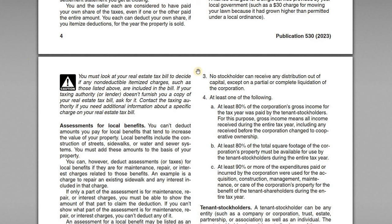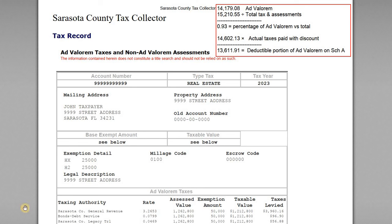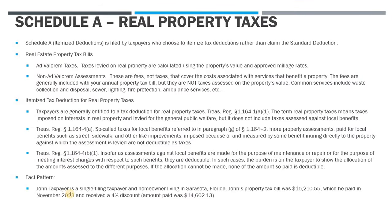Looking at the property tax bill example — in this example we have John Taxpayer, a single filing taxpayer living in Sarasota. His property tax bill for the year was $15,210.55 and he paid it in November 2023. By paying early, most counties offer a discount, and he received a 4% discount, so the actual cash he paid was $14,602.13.